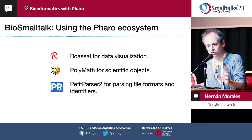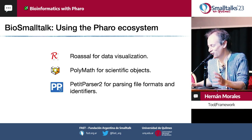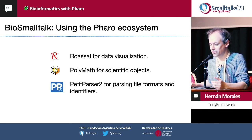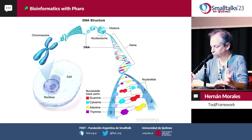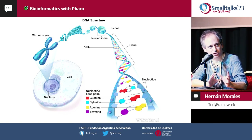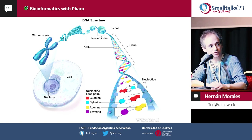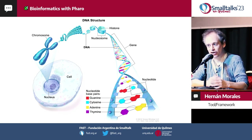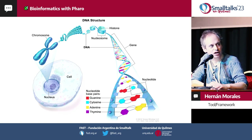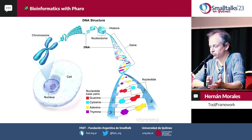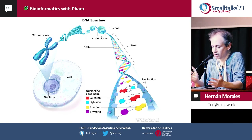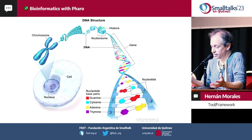A brief introduction to the biology behind the objects: the DNA structure — as shown in this picture — is that each cell in eukaryotic organisms has a nucleus, and each nucleus contains its own copy of the genome. The genome is the collection of all of an organism's DNA.